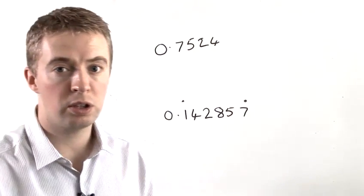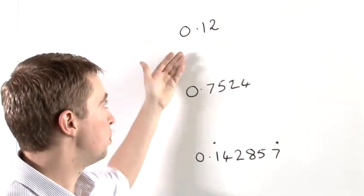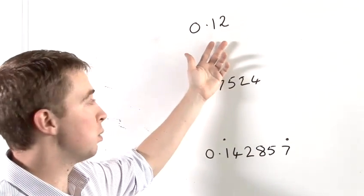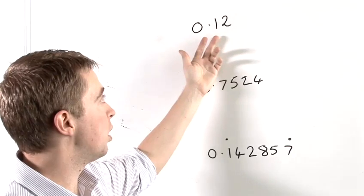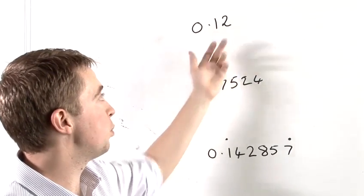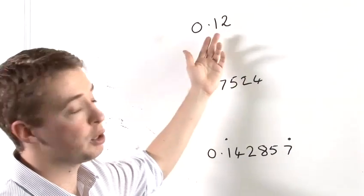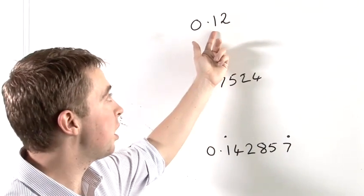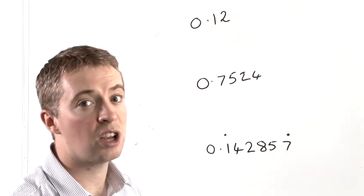So if we look at the first example we have up here, 0.12. So what you have to think about when you're converting this to a fraction is how many decimal places do we have. In this case, we have two. The first decimal place represents tenths, and the second represents hundredths.